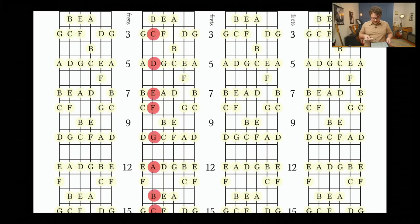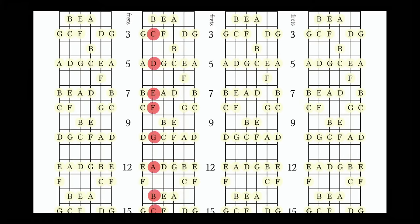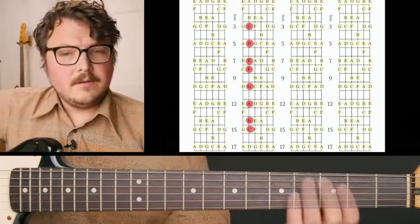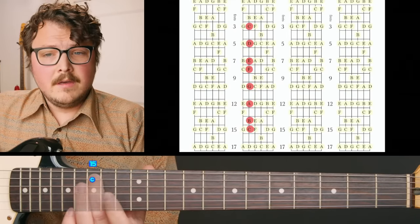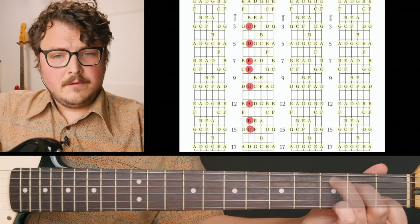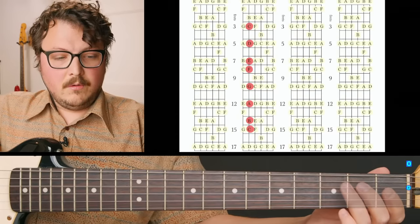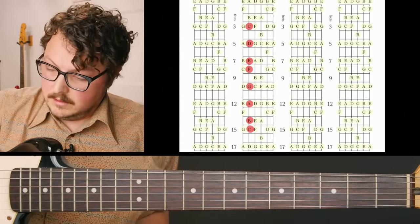Let me sneak back over to my camera guitar here. We've got a C right here. Then we go whole, whole, half, whole, whole, whole, half. Kind of cool, right? You can also play it like this. So C, D, E, F, G, A, B, C — and then we go whole, whole, half, whole, whole, whole, half. Now this is where things get really cool.